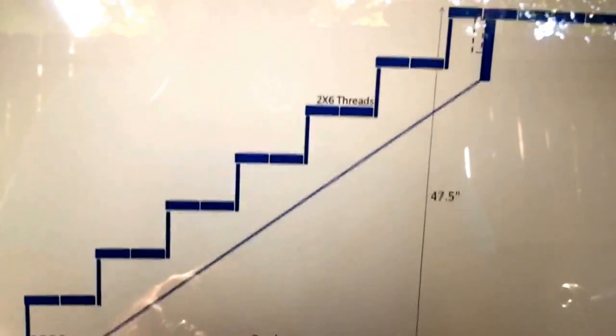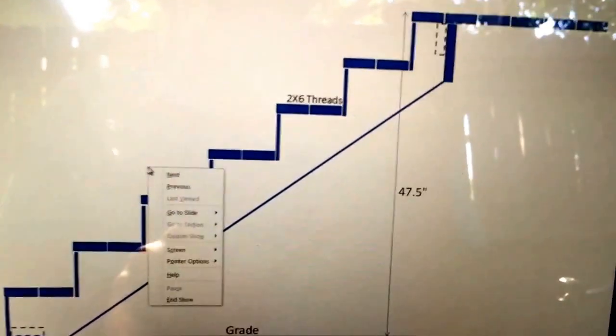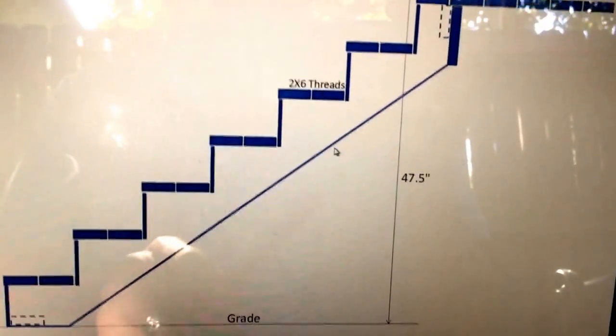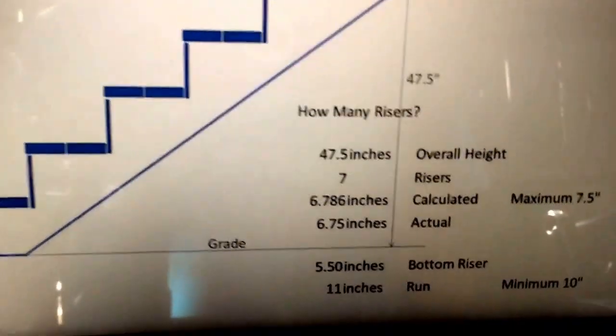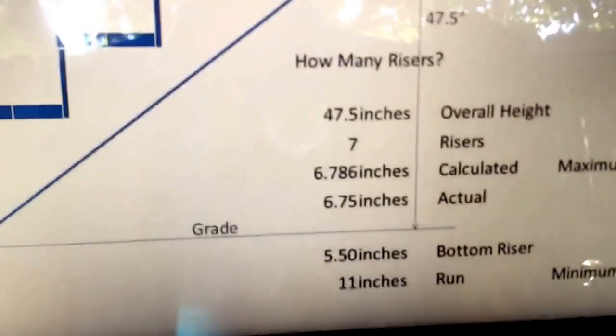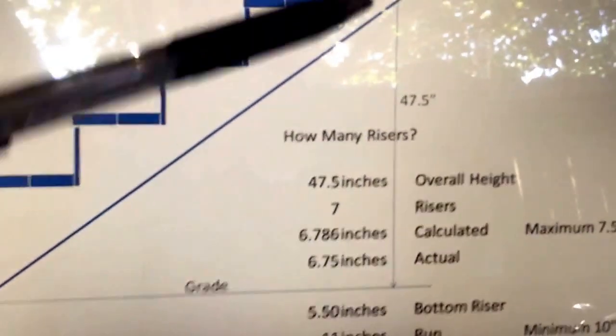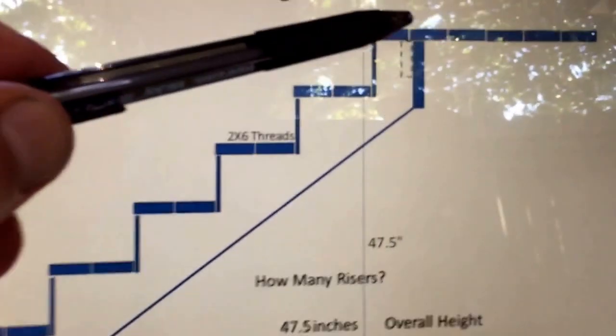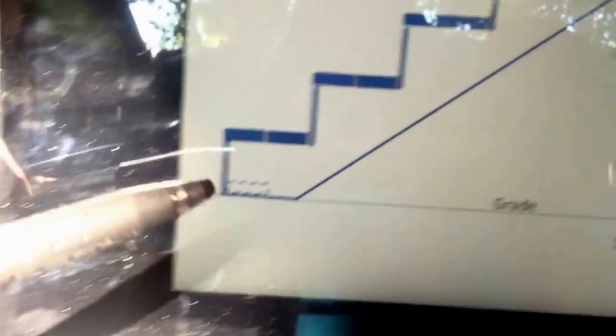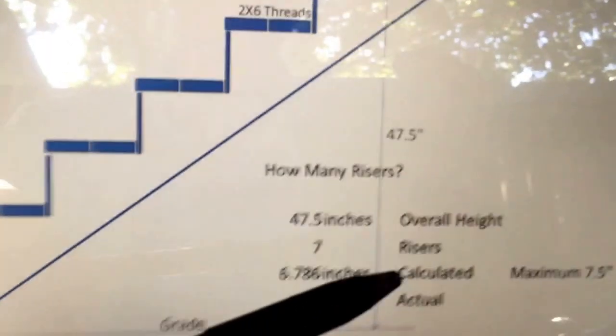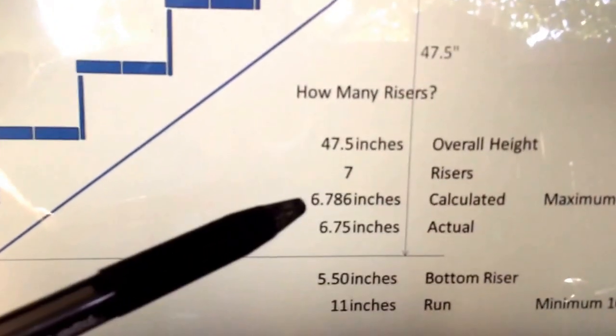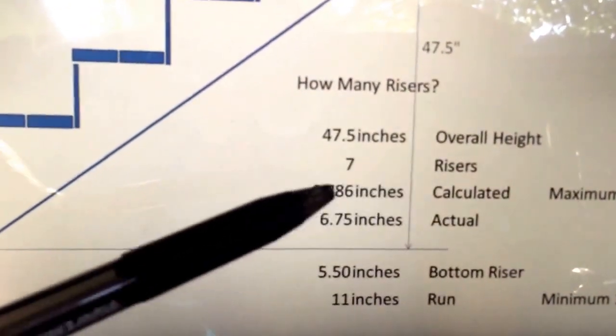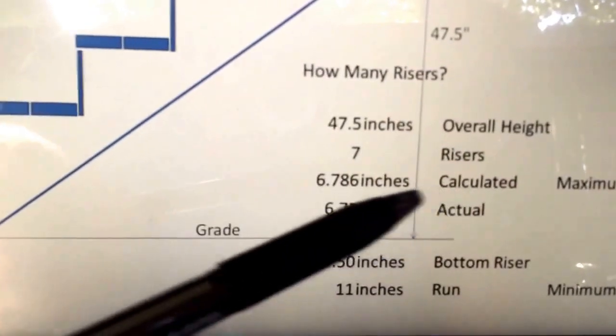So here's the math. How many risers do we require? If we have a 47 and a half inch overall rise, that's from the top of the deck to the top of grade right here. We can take and we can divide that number by, in this case we're going to use seven and we get just over six and three quarters, about a 32nd over six and three quarter inches.